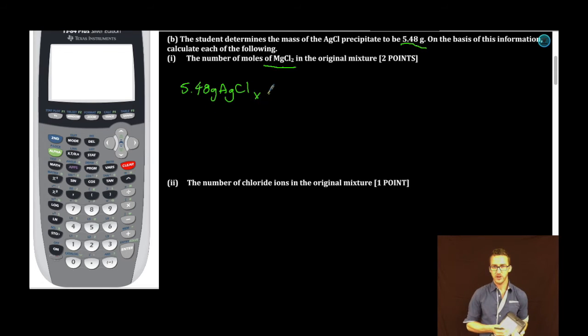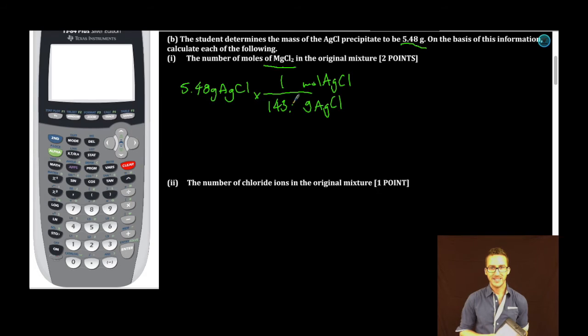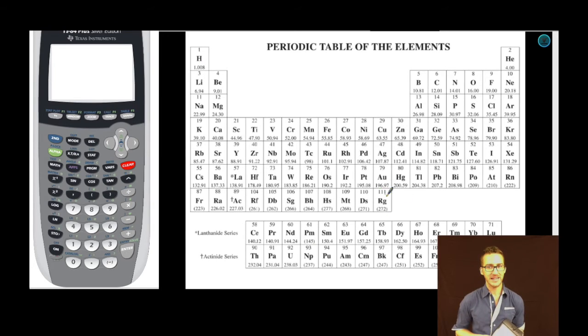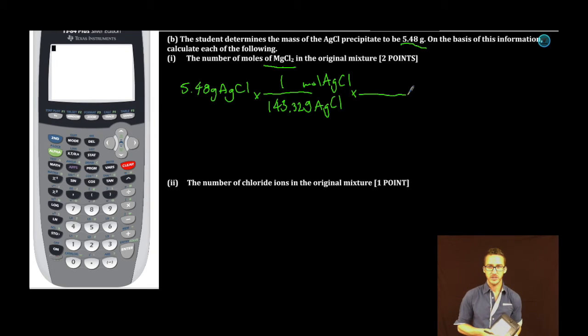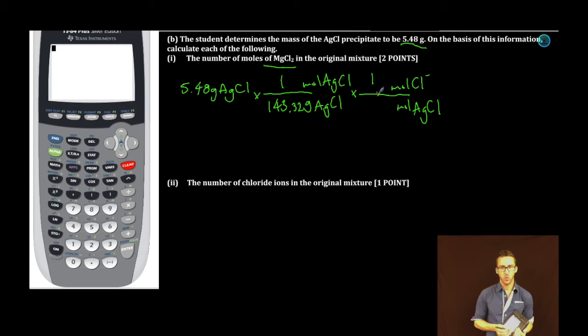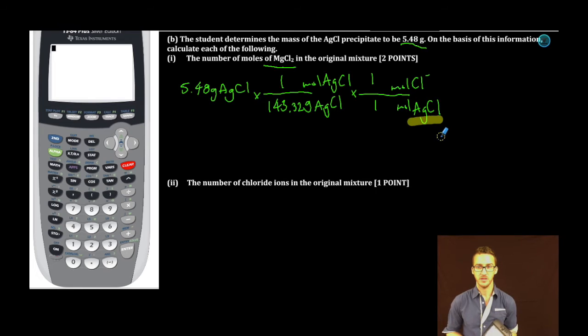So, if we can figure out how much chloride we have, we can figure out number of moles of magnesium chloride in the original mixture. So, first thing I'm going to do is convert this to moles. My molar mass of AgCl is 143.32. I get that from my trusty periodic table. Next thing I'm going to do is I'm going to convert my moles of silver chloride to moles of chloride ions. That ratio is one to one. Think about the relationship in the formula between this whole compound, silver chloride, and chloride itself. For every one of these, there's one chloride ion.